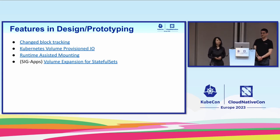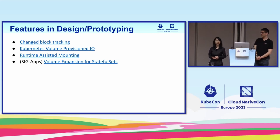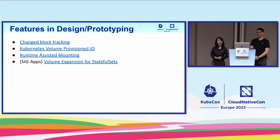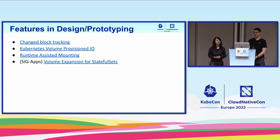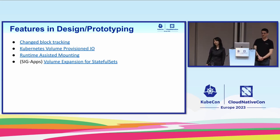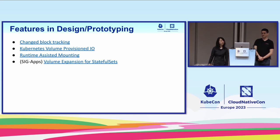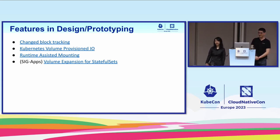There are also a few features in design and prototyping. Change block tracking is a feature the data protection working group has been working on — we want to design new APIs and a common approach to retrieve changed blocks of data, which is useful for efficient backups. There's also Kubernetes volume provisioned IO, where we're trying to design APIs to dynamically provision and modify IOPS and throughput of persistent volumes. Additionally, we have runtime-assisted mounting of persistent volumes and volume expansion for StatefulSets in design. If you're interested, take a look at the KEPs and join the discussion.